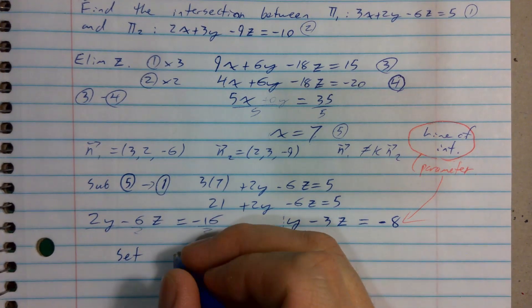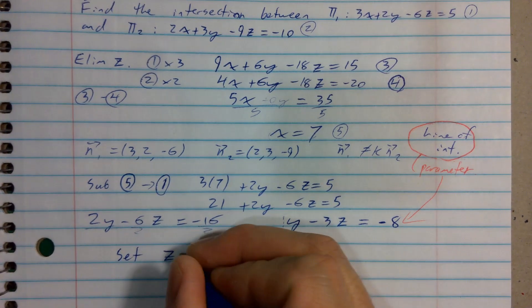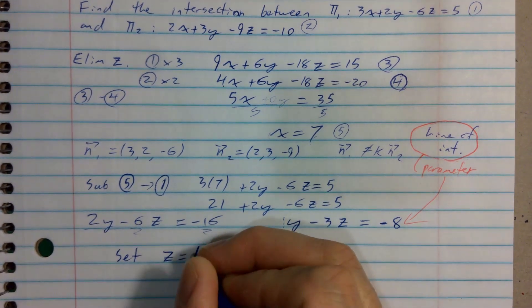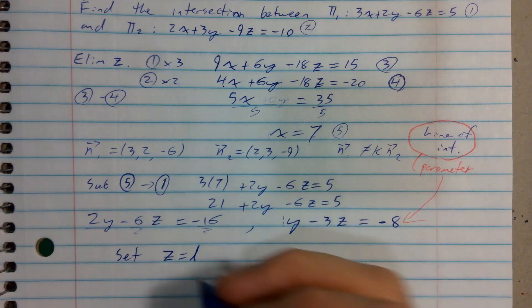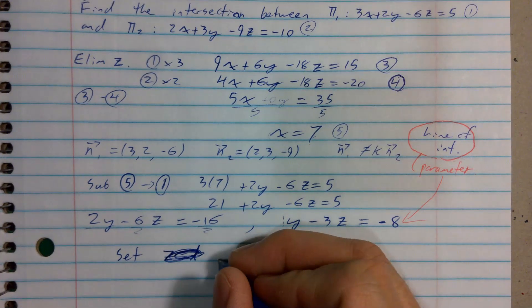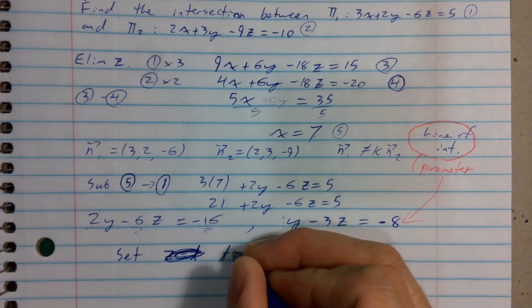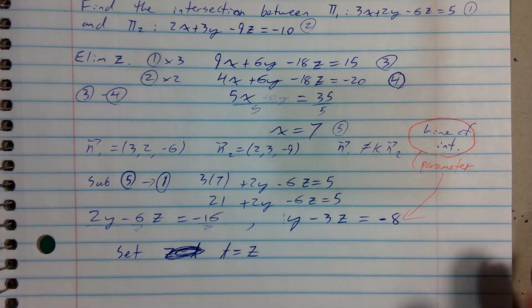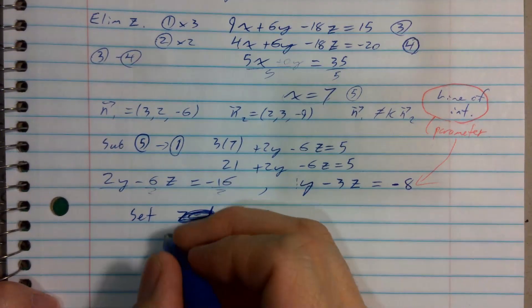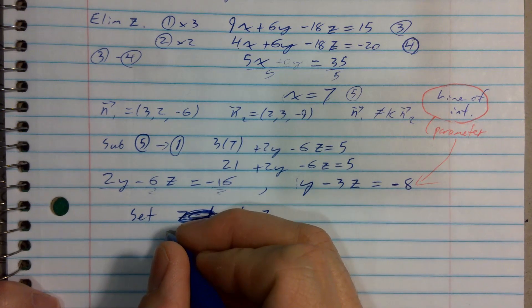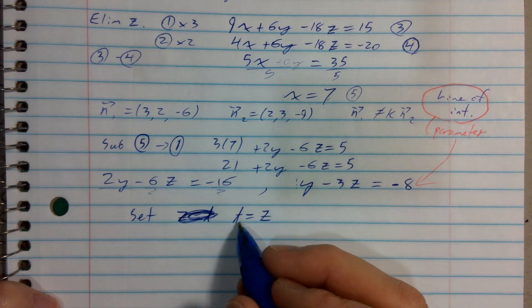I'm going to set z to be t, or I can never remember what direction we find this easier. I'm going to set my parameter to be the value of z, but really the impact is that means that my parametric equation for z is going to be 0 plus 1t.